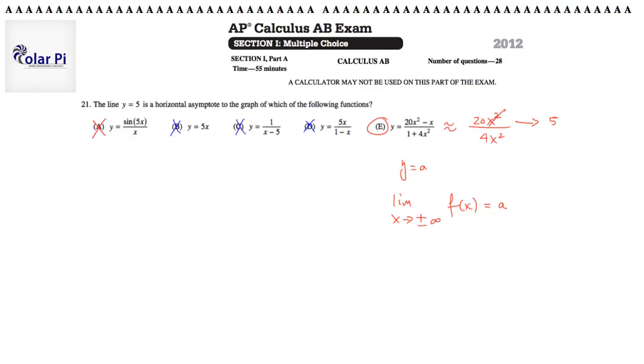But let me explain why A isn't it, but it's like very close. So A is preying on that famous limit: limit as x goes to 0 of sine x over x equaling 1, right?